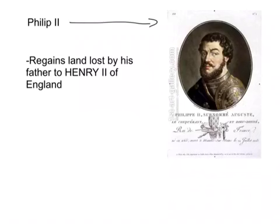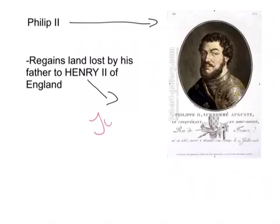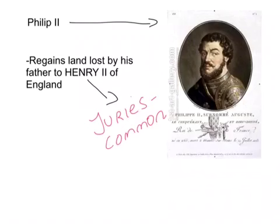One of the most important things Philip II did was regain the land lost by his father to Henry II of England. Philip II's father, Louis VII, lost the part of France called Normandy to Henry II of England — as you should remember from the previous video. Do you remember what Henry II did with regards to democratic processes? He implemented the jury system, which also led to common law. Philip II gets back this land in 1204.